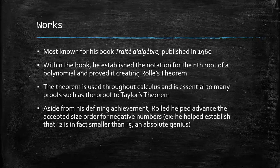Rolle's theorem states: if a real-valued function f is continuous on a proper closed interval [a, b], differentiable on the open interval (a, b), and f(a) is equal to f(b), then there exists at least one c in the open interval (a, b) such that f'(c) is equal to zero. This theorem serves many functions in calculus, for example, providing the basis for the proof of Taylor's theorem.